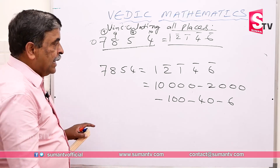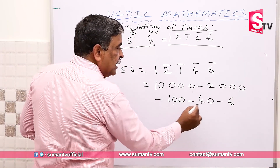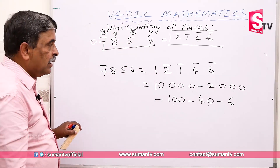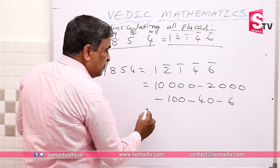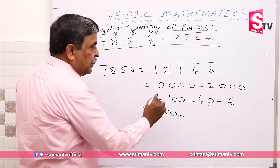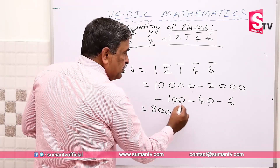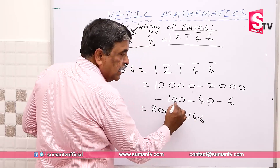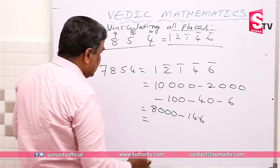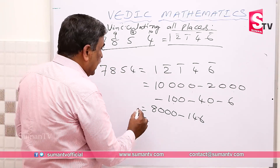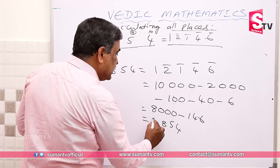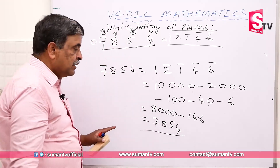It is meaning: 10,000 place, 2,000 place, 100 place, 40 place, 6 place — 7,854. Then minus 146: minus 100, minus 40, minus 6. Minus 146. It is 4, 5, and 8 — 7. That is 7,854. It is the process.